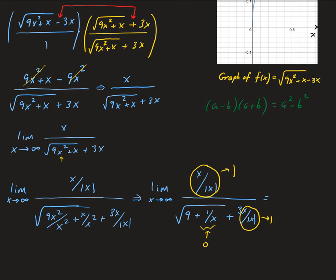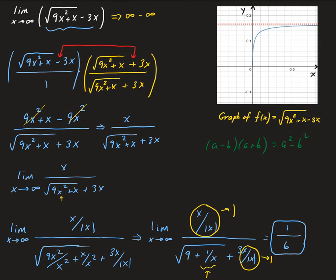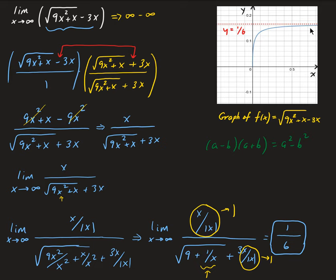So we have 1 divided by the square root of 9 plus 0, plus 3. The square root of 9 is 3, giving us 1 divided by 3 plus 3, which equals 1 over 6. So that's the solution for this limit — it's 1/6. We can see that up here in the graph: as x approaches infinity, the function gets closer and closer to the horizontal asymptote at y equals 1/6.